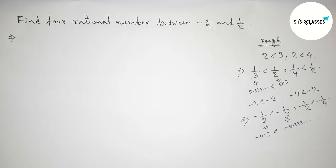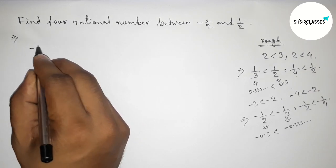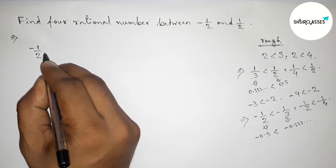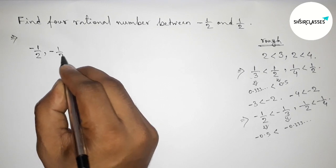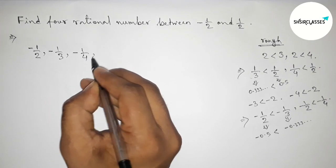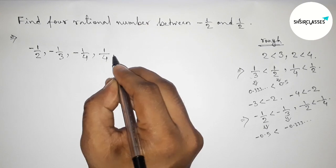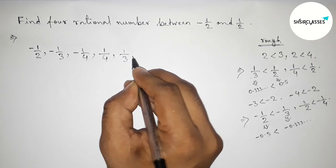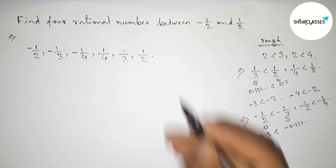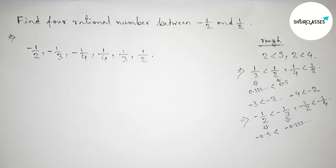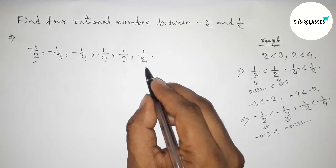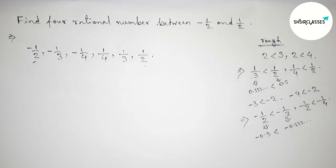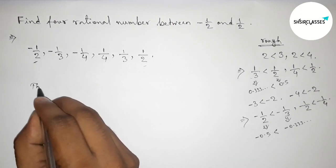So now, write down here all the rational numbers first. Minus 1 by 2, then minus 1 by 3, then minus 1 by 4, then 1 by 4, then 1 by 3, then 1 by 2. So here, between minus 1 by 2 and 1 by 2, these are 4 rational numbers.